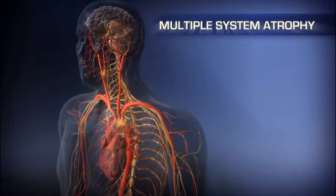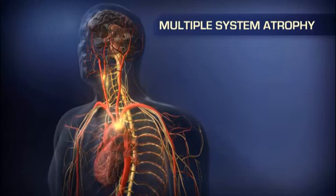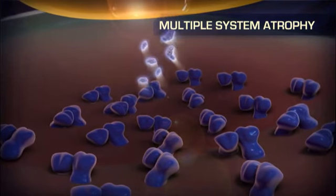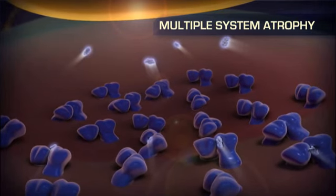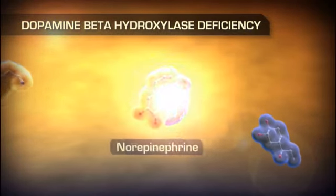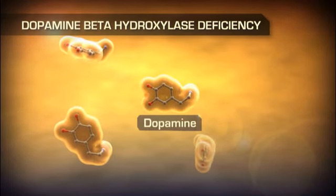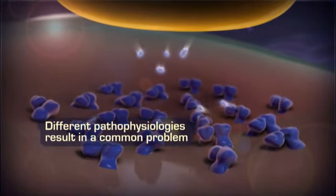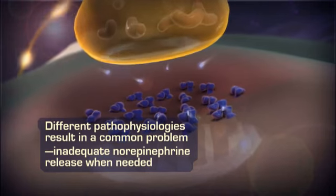Patients with multiple system atrophy suffer from degeneration in the medulla and hypothalamus, as well as in the preganglionic sympathetic neurons. In these patients, the brain may not respond appropriately to baroreceptor signaling, leading to an overall baroreflex dysfunction and a resulting failure to increase norepinephrine release by the peripheral neurons. The enzyme dopamine beta-hydroxylase, or DBH, catalyzes the conversion of dopamine to norepinephrine. In people with an innate deficiency of this enzyme, insufficient norepinephrine synthesis and release results in NOH. As you can see, many neurologic diseases with disparate pathophysiologies result in a common underlying deficit: the inability to release adequate norepinephrine when required by a change in posture.